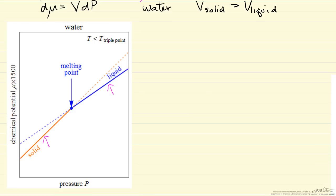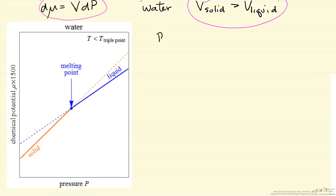At low pressure, the dashed line shows what the chemical potential for liquid would be, but since the solid has a lower chemical potential, that's the stable phase. Now as we raise the pressure, the slope of the solid line (orange) is greater than the slope of the liquid line (blue), and that's because the volume of solid is greater than the volume of liquid. The transition point between solid and liquid corresponds to the melting point, so as we raise the pressure, ice will melt at a given temperature — we convert the solid into the liquid.